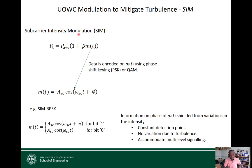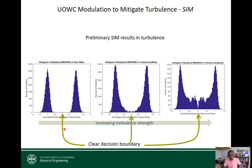This motivates studying subcarrier intensity modulation (SIM). In the binary case with SIM, bit one is represented by a sinusoid with a 180-degree phase shift and bit zero by a sinusoid with zero phase shift. The amplitude is constant, so when turbulence occurs the phase — where the information resides — is preserved and does not change, allowing reliable data recovery. As illustrated, even as turbulence increases from the left to right figure, the decision boundary between the two phases remains very clear, unlike OOK.